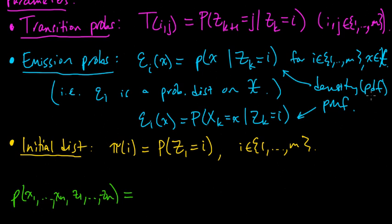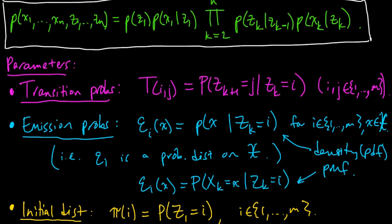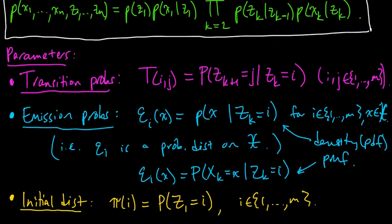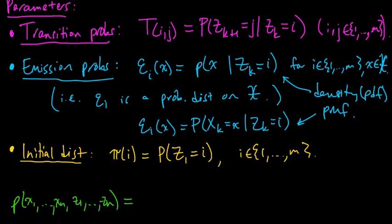So now we were just about to write down the joint distribution for the general thing. And we said what these parameters are. Just to make it concrete, let's write down the joint distribution in terms of these parameters. So we have pi I times the probability of X1 given Z1.